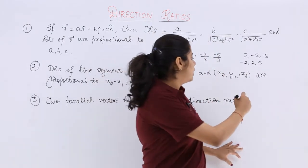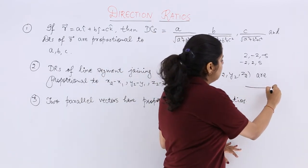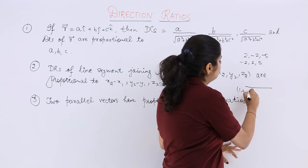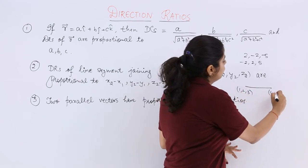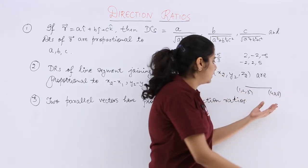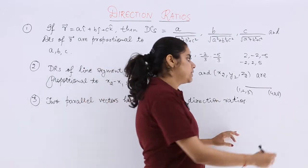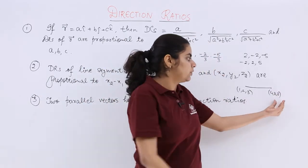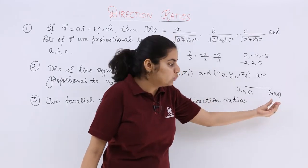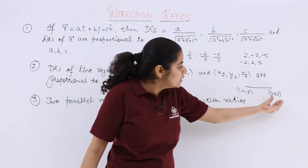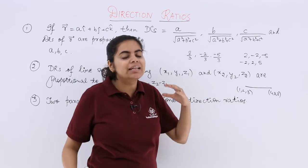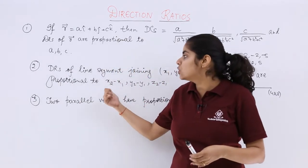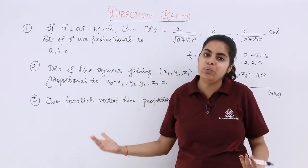Same thing. Suppose you have a line and the line has the coordinate say 1, 2, 3 and here you have 4, 8, 6, anything, anything. So what you will do is you will subtract. This is your x2, y2, z2. This is your x1, y1, z1. You will subtract and the direction ratios will be proportional to this result that you obtain.